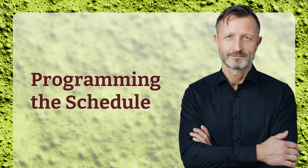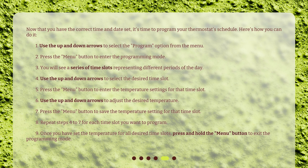Programming the Schedule. Now that you have the correct time and date set, it's time to program your thermostat schedule. Here's how: 1. Use the Up and Down Arrows to select the Program option from the menu. 2. Press the Menu button to enter the programming mode. 3. You will see a series of time slots representing different periods of the day. 4. Use the Up and Down Arrows to select the desired time slot. 5. Press the Menu button to enter the temperature settings for that time slot. 6. Use the Up and Down Arrows to adjust the desired temperature. 7. Press the Menu button to save the temperature setting for that time slot. 8. Repeat steps 4 to 7 for each time slot you want to program.